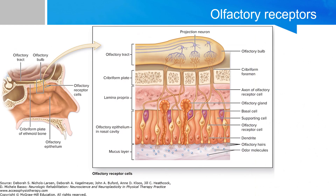Odors first enter the nasal cavity and are detected by the olfactory receptors in the upper posterior nasal cavity. The receptors are highly modified bipolar neurons. They sit in the olfactory epithelium, which houses the olfactory receptors, the support cells, and the basal stem cells. This means that unlike the receptive cells associated with other special senses like vision and hearing, cells associated with receiving olfactory information can regenerate throughout life.